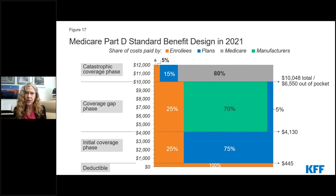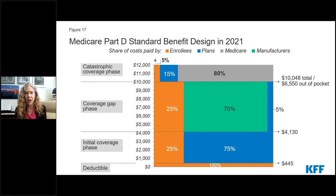Unlike Part D, Part B is not administered through private plans. You don't need to voluntarily sign up — everybody who's enrolled in Medicare Part B automatically has access to drug coverage through Part B. Under Part D, unless you are receiving low-income subsidies, you are required to pay what your plan charges for prescription drugs. And I want to emphasize the fact that Part D does not have an annual limit on out-of-pocket drug spending.